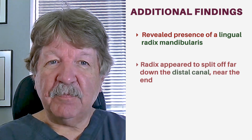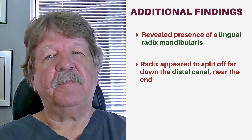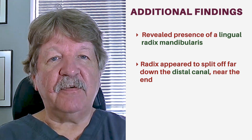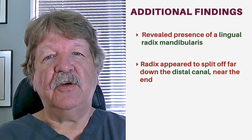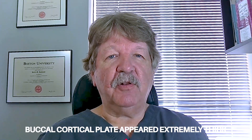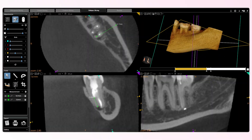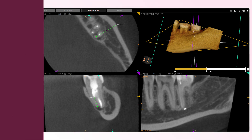The radix seemed to split off very far down the distal canal, almost at the end. Examination of the axial slices showed virtually no canal space visible in the CBCT. Closer examination of the buccal cortical plate revealed it to be extremely thick, and the apices of this particular tooth appeared to be very close to the lingual cortical plate — very far lingually, almost 15 millimeters from the buccal cortical plate.